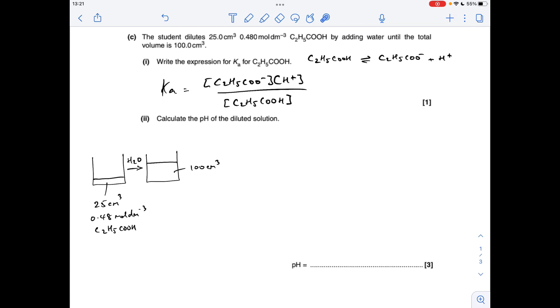Moving on to the calculation now. A little bit tricky, this one. I've drawn my classic diagram to try and help visualize what's going on. They've taken 25 cm cubed of this concentration of propanoic acid, basically just put water in and made it up to 100 cm cubed. To calculate the pH of this diluted solution, remember it's a weak acid.